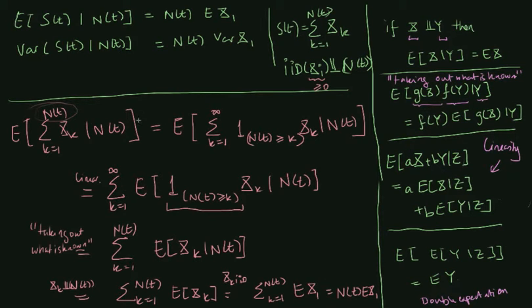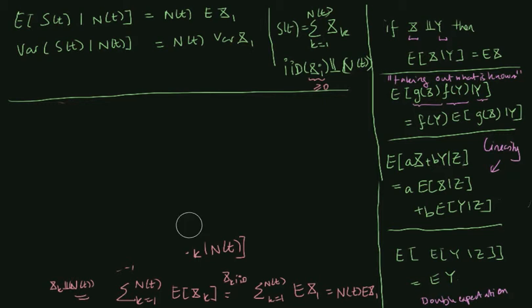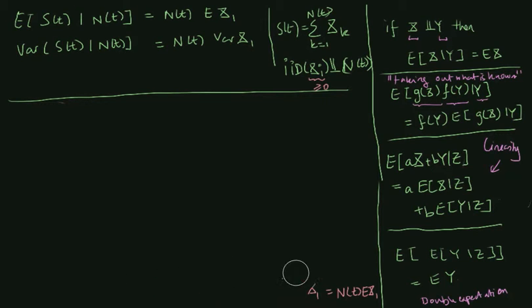That was relatively simple to prove. We now proceed to find the conditional variance of S(t). Note that in this proof we only used that the X's needed to have identical distributions — we did not actually use that they needed to be independent. So the independence assumption is not needed for the first identity, but it is required for the variance identity, as we will see in a moment.